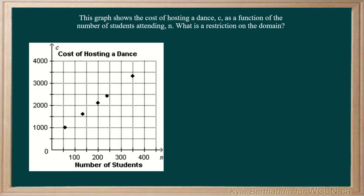Well taking a look at our graph we can see the cost of the dance here on the y or c axis and the number of students on the x axis or n axis here. And we have to find a restriction on the domain, in other words a restriction on the number of students.